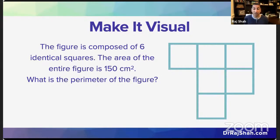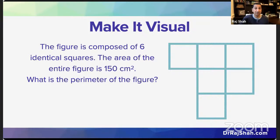What do I mean when I say make it visual? Textbook problems in general don't have a lot of images attached to them — they're mostly words. Here, for example, I have a problem straight out of a textbook: the figure is composed of six identical squares, the area of the entire figure is 150 square centimeters, what is the perimeter of this figure? Most students who don't feel super confident about math will get lost in the jargon and probably never even see that picture. So when I say make it visual, I mean take the words out, get rid of them, and just let the picture stand for itself.